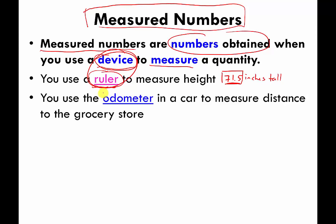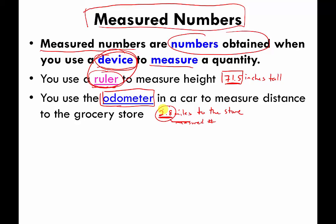Another example of a measured number is when you use the odometer — the little mileage meter on your car — to measure the distance to the grocery store. If your odometer says that it's 2.8 miles to the store, this 2.8 is a measured number. The reason it's a measured number is because you got this number from a device called an odometer built into your car. Or Google told you on its maps, and Google's cars figured out how far it was. But somewhere along the line, there was a device that made the measurement.